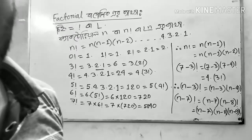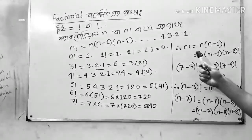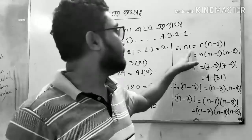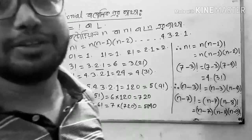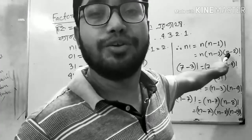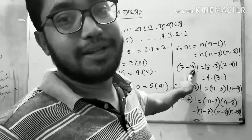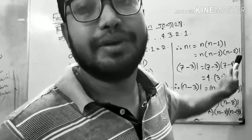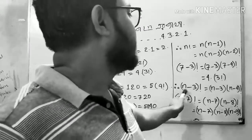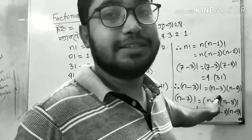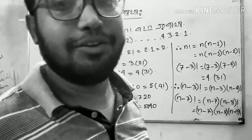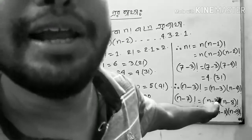Here we go from n factorial. n factorial is n into n-1 factorial. Then n into n-1, n-2 factorial. Now n-3 factorial is n-3 into n-4 factorial. So n-3 into n-4 factorial, showing n-3 into n-7 into n-1 factorial.